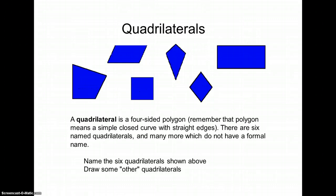Quadrilaterals. A quadrilateral is a four-sided polygon. Remember, we know that polygons mean it's a geometrical shape that is simple, closed, a curve, and has straight edges.